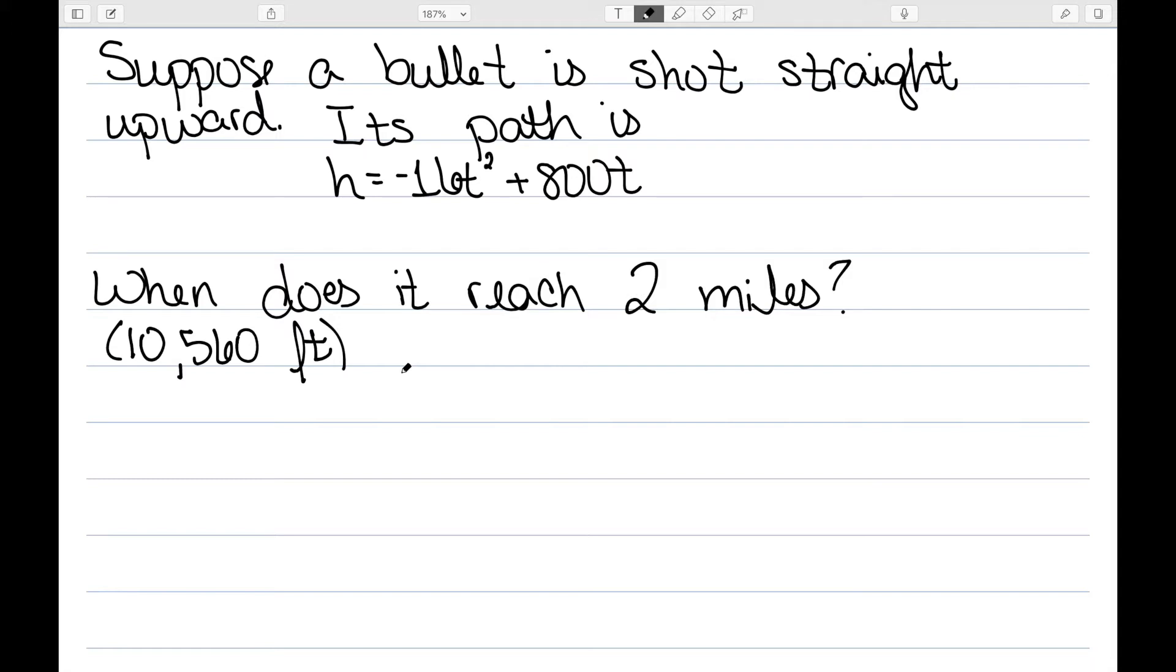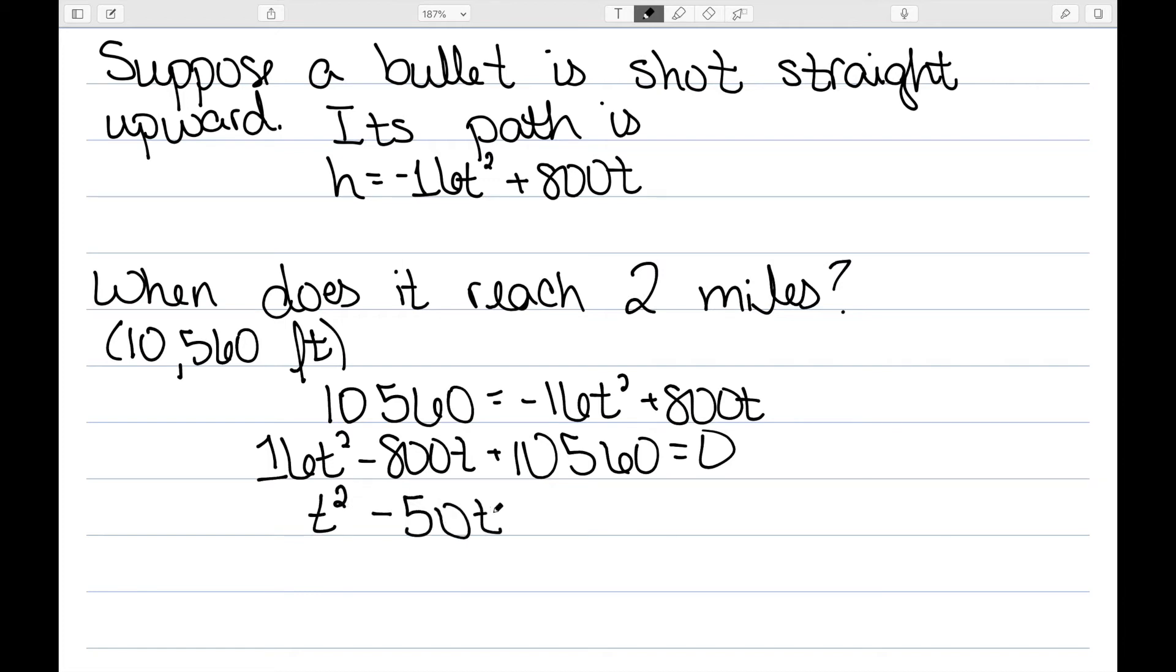I now want to know when it reaches 2 miles or 10,560 feet. Well then I would set h equal to 10,560. That should equal minus 16t squared plus 800t. We need to get everything to one side. So we have 16t squared minus 800t plus 10,560 equals 0. We can divide everything through by 16. We get t squared minus 50t plus 660 equals 0.